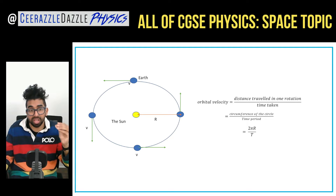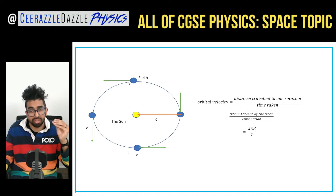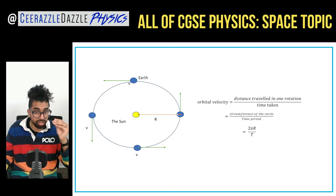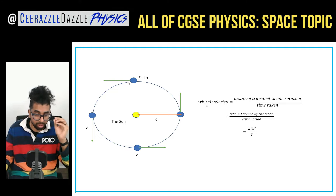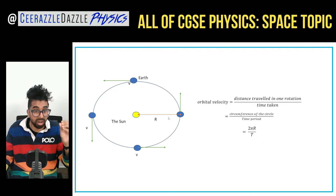Orbital velocity: if you want to work out the orbital velocity of an object, it's going to be the distance traveled in one rotation divided by the time taken. The distance traveled in one rotation is the circumference of the circle, which is 2πr. The time taken to go around is the time period T. So to calculate the orbital velocity, it will be 2πr divided by T, where r is the distance between the Sun and the Earth.